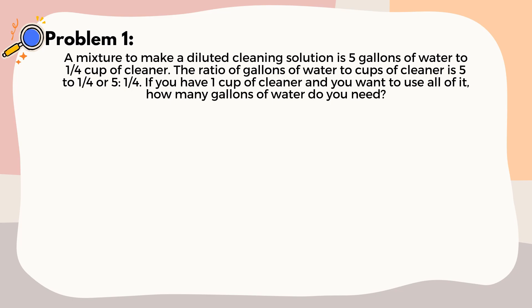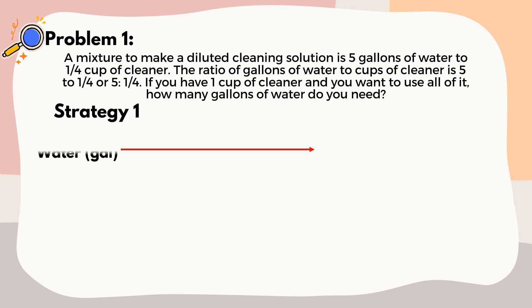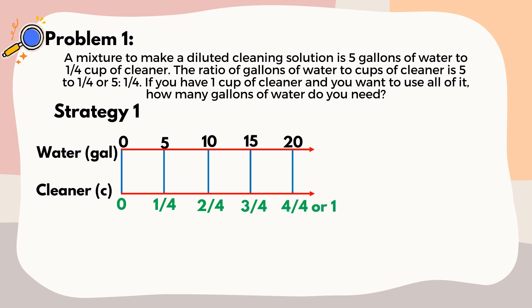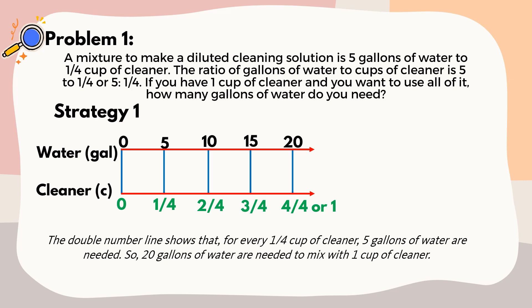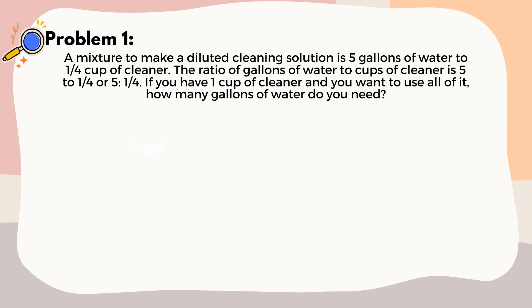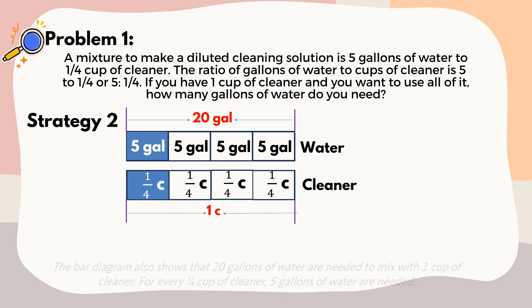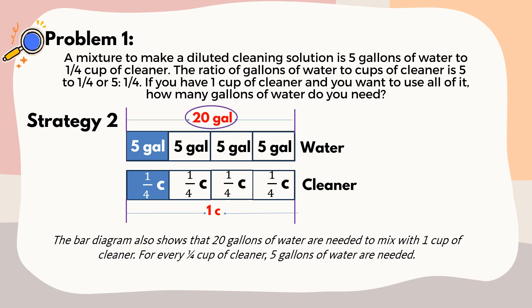To answer this problem, we have different strategies that we can use. The first strategy uses a double number line, which shows that for every one-fourth cup of cleaner, five gallons of water are needed. So 20 gallons of water are needed to mix with one cup of cleaner. The second strategy uses a bar diagram, which also shows that 20 gallons of water are needed to mix with one cup of cleaner — for every one-fourth cup of cleaner, five gallons of water are needed.